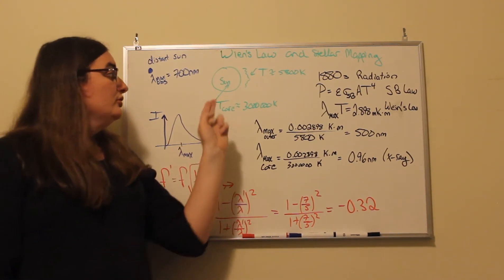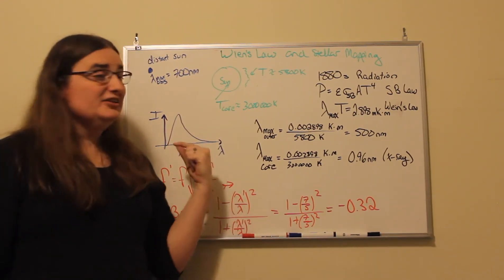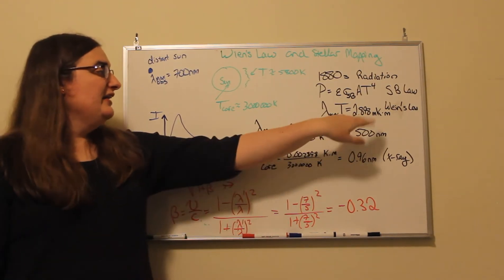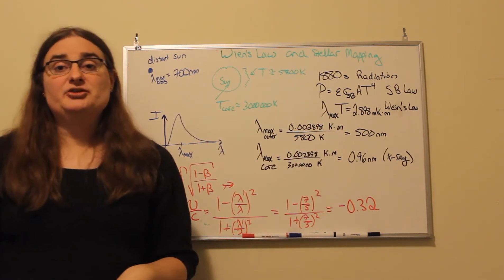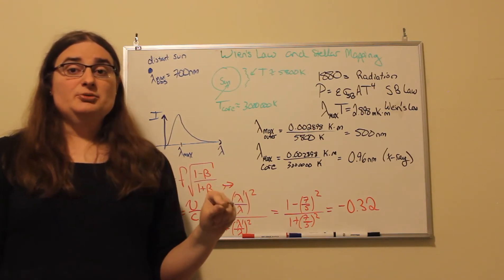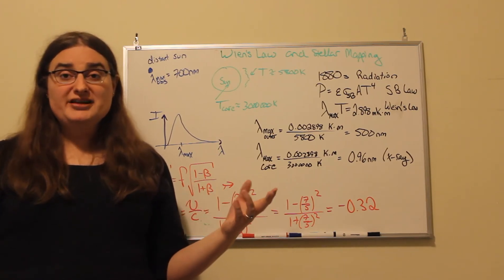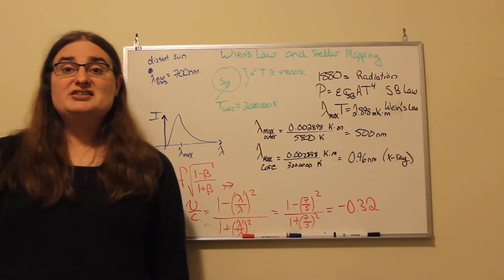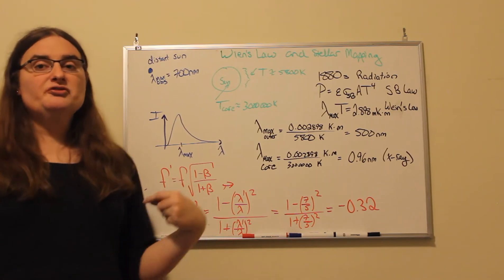So for the outer surface of our sun, it happens to be at a temperature of about 5,800 kelvin. So if I take 5,800 kelvin and I divide it into Wien's constant, I get 500 nanometers as the wavelength of light, which happens to be right in the middle of the visible spectrum. Our visible spectrum is about 400 nanometers to about 700 nanometers because those correspond to the wavelengths of light that are most given off by the surface of our star.